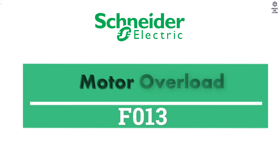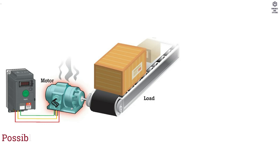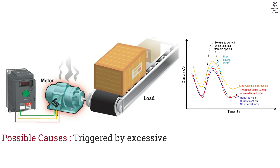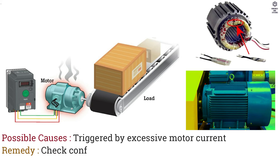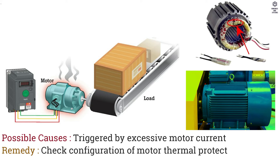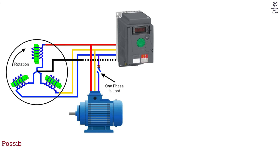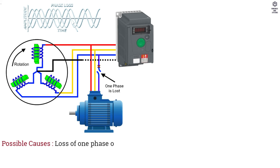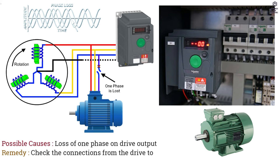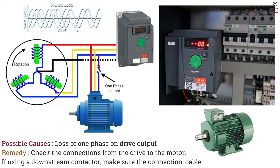F013 Motor Overload. Possible Causes: Triggered by Excessive Motor Current. Remedy: Check Configuration of Motor Thermal Protection and Motor Load. F014 Output Phase Loss. Possible Causes: Loss of 1 Phase on Drive Output. Remedy: Check the Connections from the Drive to the Motor. If Using a Downstream Contactor, Make Sure the Connection, Cable and Contactor Are Right.